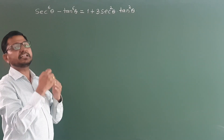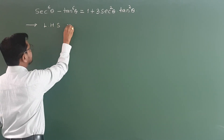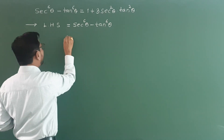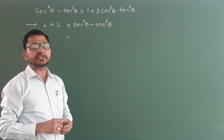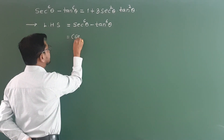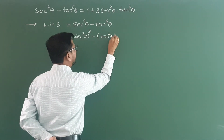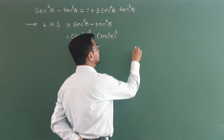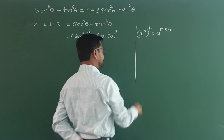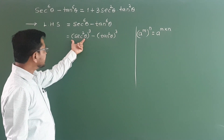See the way of writing. First, obviously LHS is equal to sec raise to 6 theta minus tan raise to 6 theta. Now for the raise to 6 theta formula — it is equal to the formula a raise to m into m — we use this and rewrite it as sec square theta cubed minus tan square theta cubed.